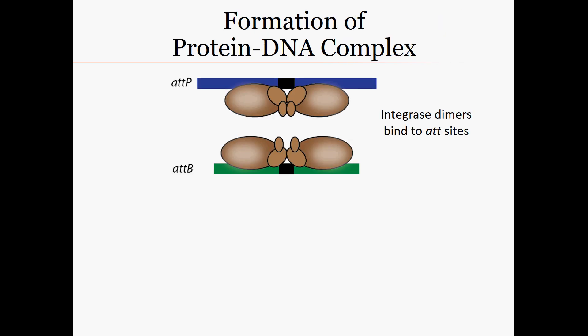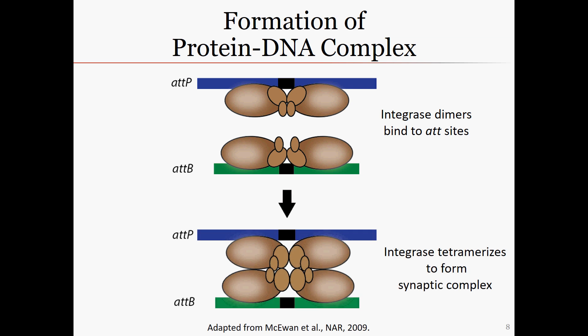We will now discuss the mechanism of the integrase enzyme in more detail. The rate-limiting step in the recombination reaction is the formation of the protein-DNA complex. Each monomer, or single unit of enzyme, binds to one side of one recognition site, forming a dimer on each att site. The three-dimensional conformation of the dimers is different on the two different sites, which allows them to properly pair. The two dimers then come together, forming a complex with the two DNA strands in close proximity. The IHF cofactor assists in this process.